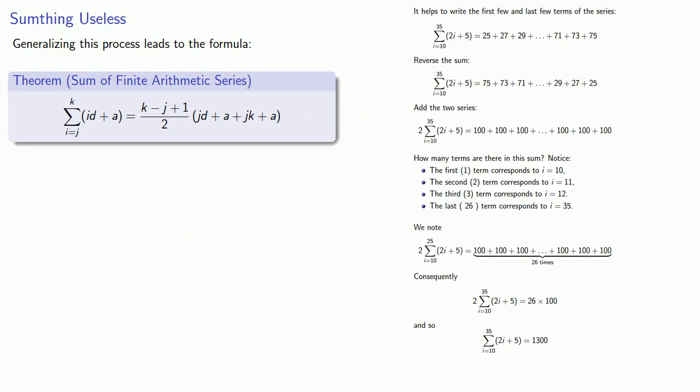If you do insist on memorizing a formula here's a way to think about it. We added the first and last terms together. Then we multiplied by the number of terms we added, which gave us twice the sum of the series. So we divided this product by 2.